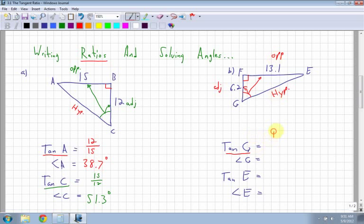That means I have 13.1 over 6.2. Remember, it's always opposite over adjacent. That's the ratio.